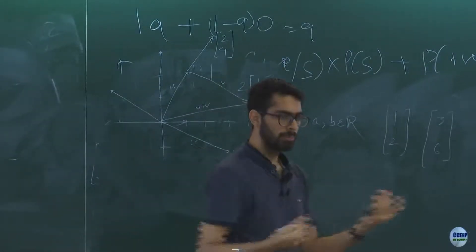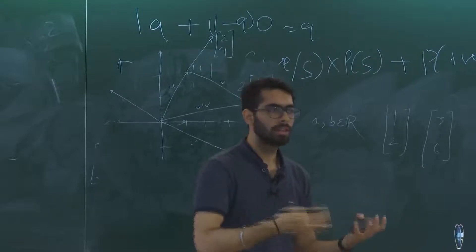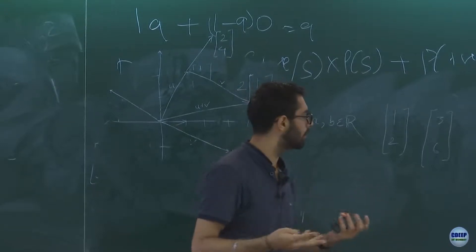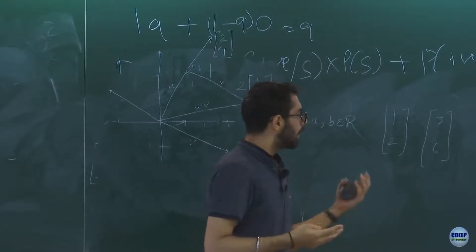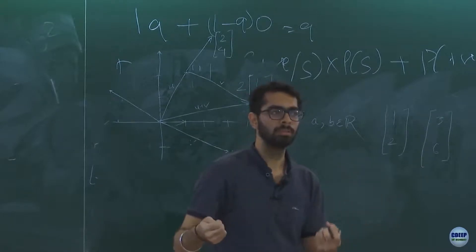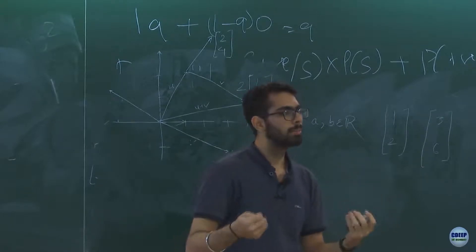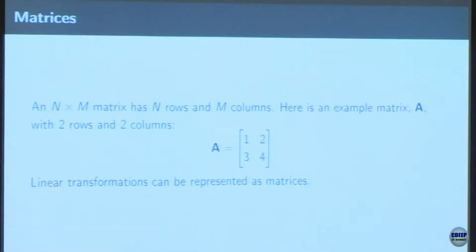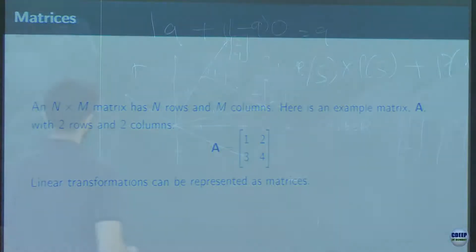Similarly, if we have three-dimensional vectors and pick three random 3D vectors and take a linear combination of them — multiplying by scalars and adding — we can represent an entire 3D space. Now we turn to the notion of matrices. A matrix can be seen as some sort of transformation of space.